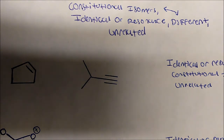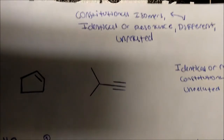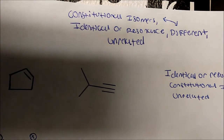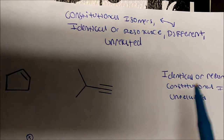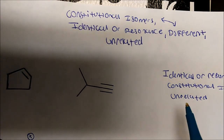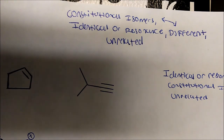To get to the bottom of things, we're given a choice between two molecules and asked: are these identical or resonance structures, constitutional isomers, or unrelated? The first thing I usually do is look to see if the molecular formulas are the same.